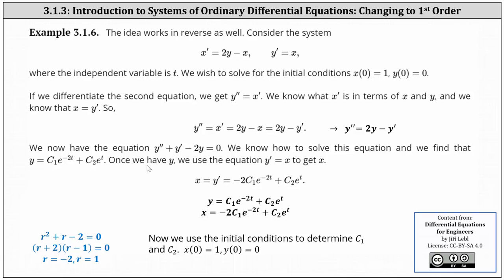Now that we have y, we can determine x because x is equal to y prime. This indicates that x equals negative 2 c1 e to the negative 2t plus c2 e to the t. So we know y equals c1 e to the negative 2t plus c2 e to the t, and x equals negative 2 c1 e to the negative 2t plus c2 e to the t. From here, we need to determine c1 and c2 using the initial conditions. Let's do this on the next slide.